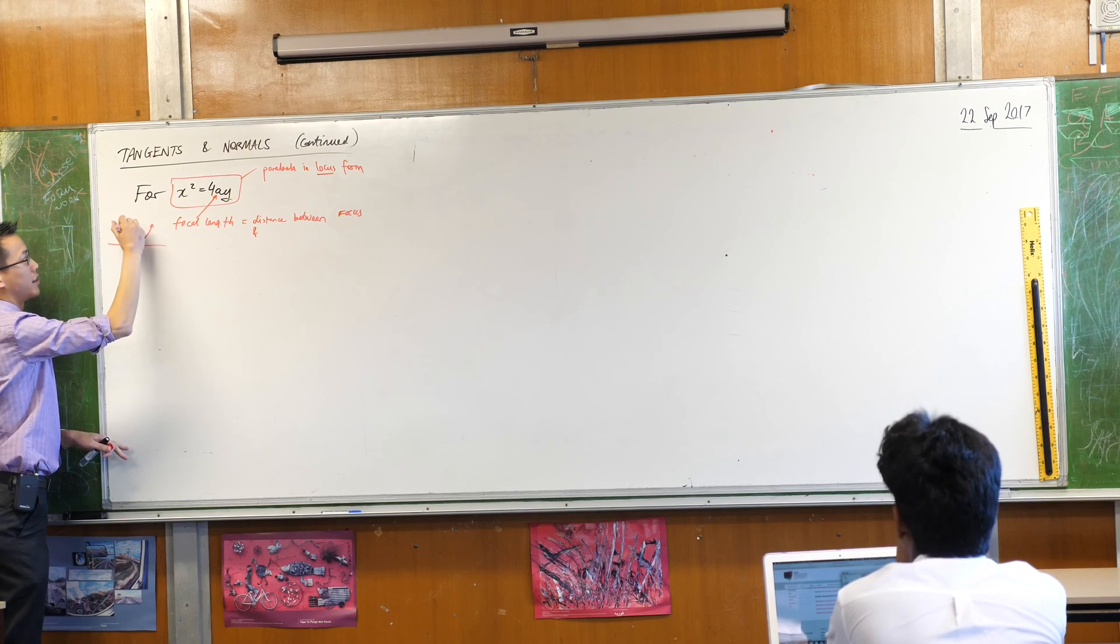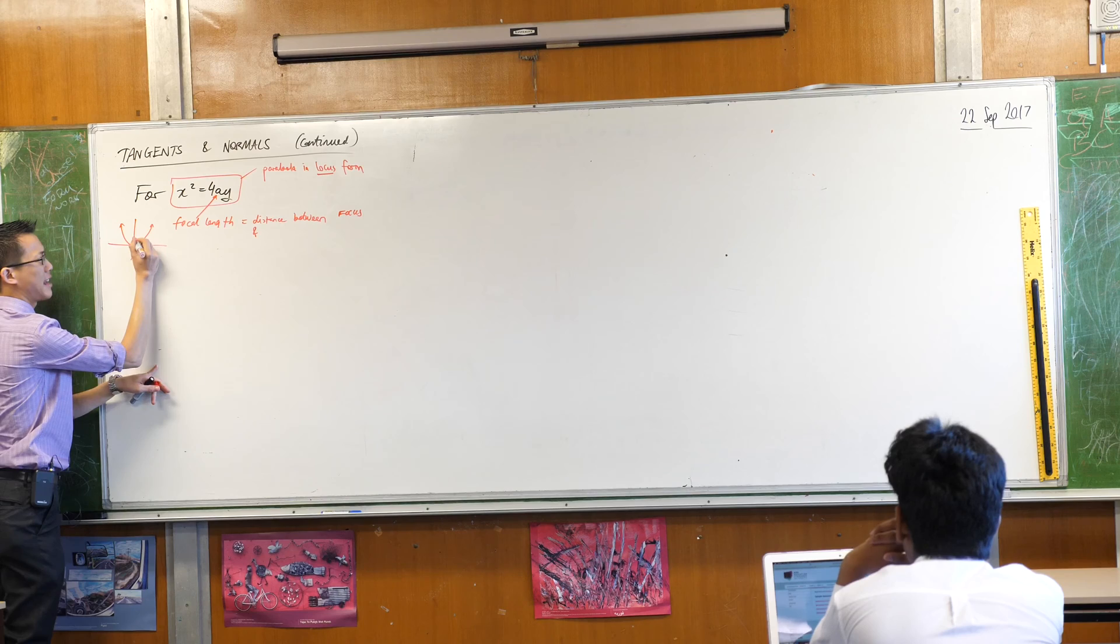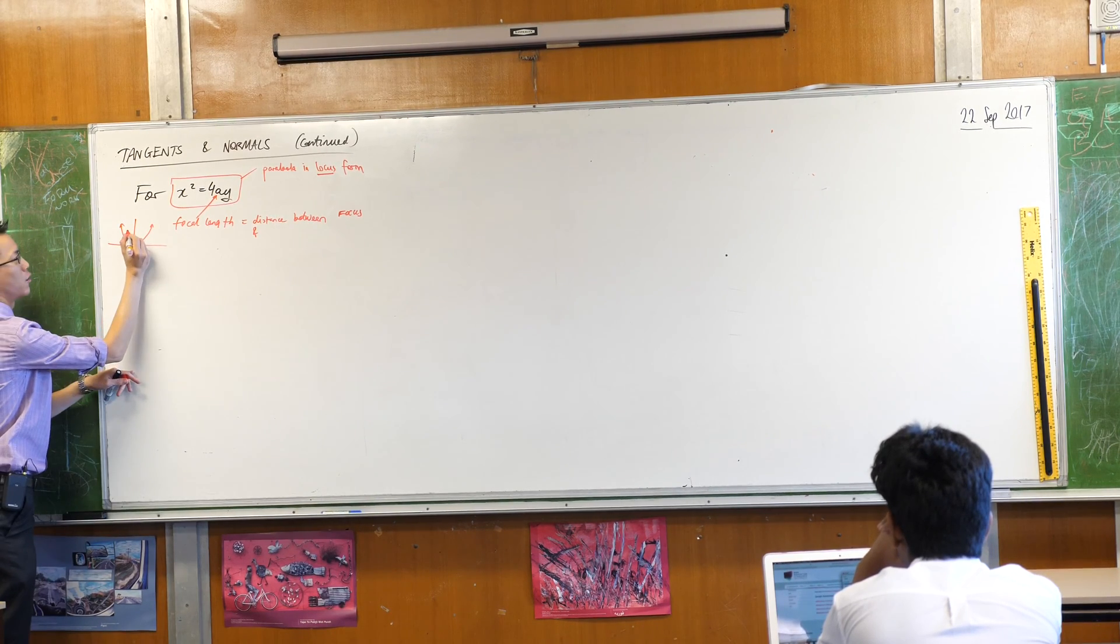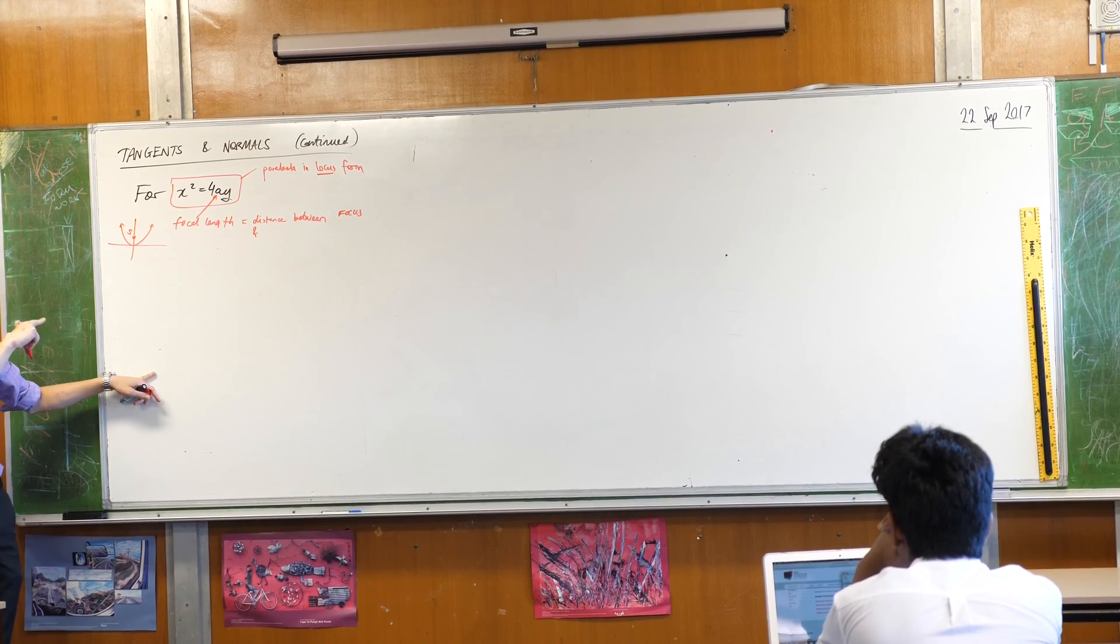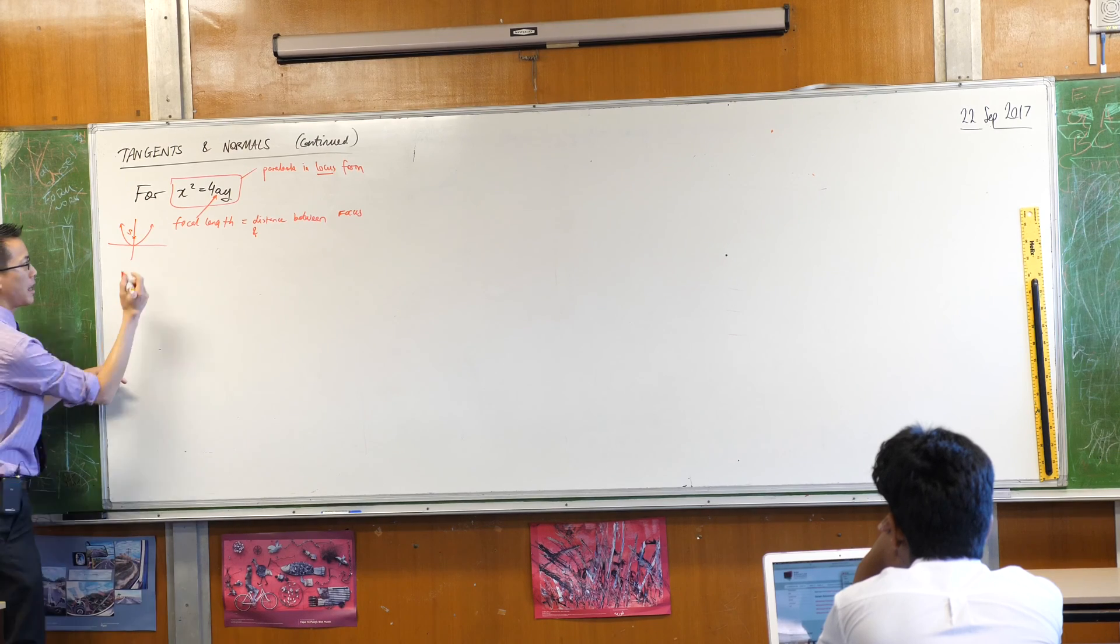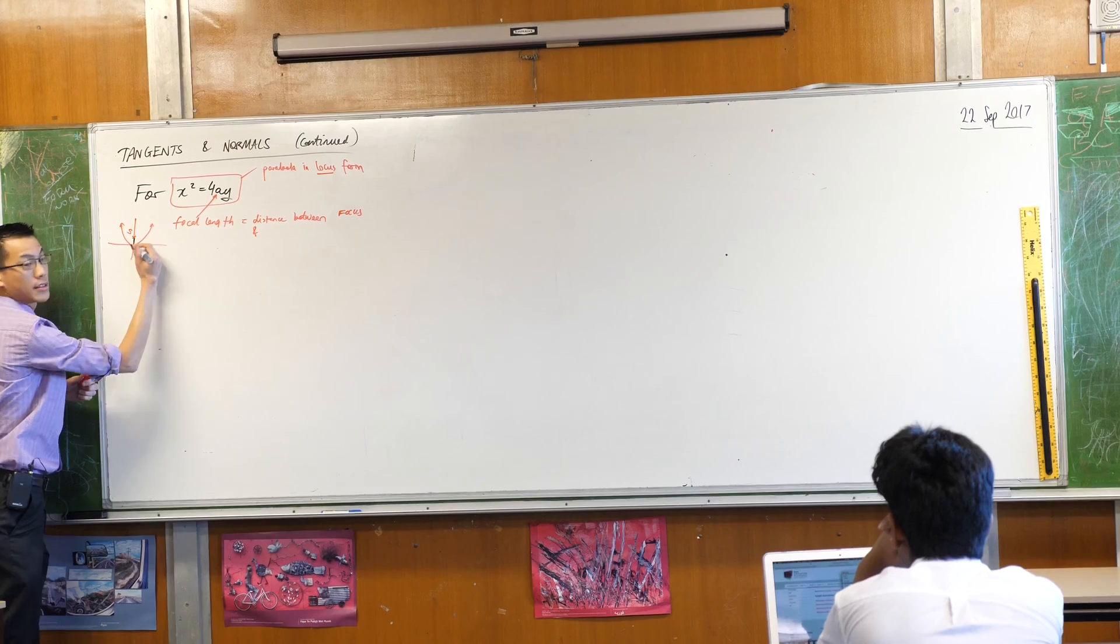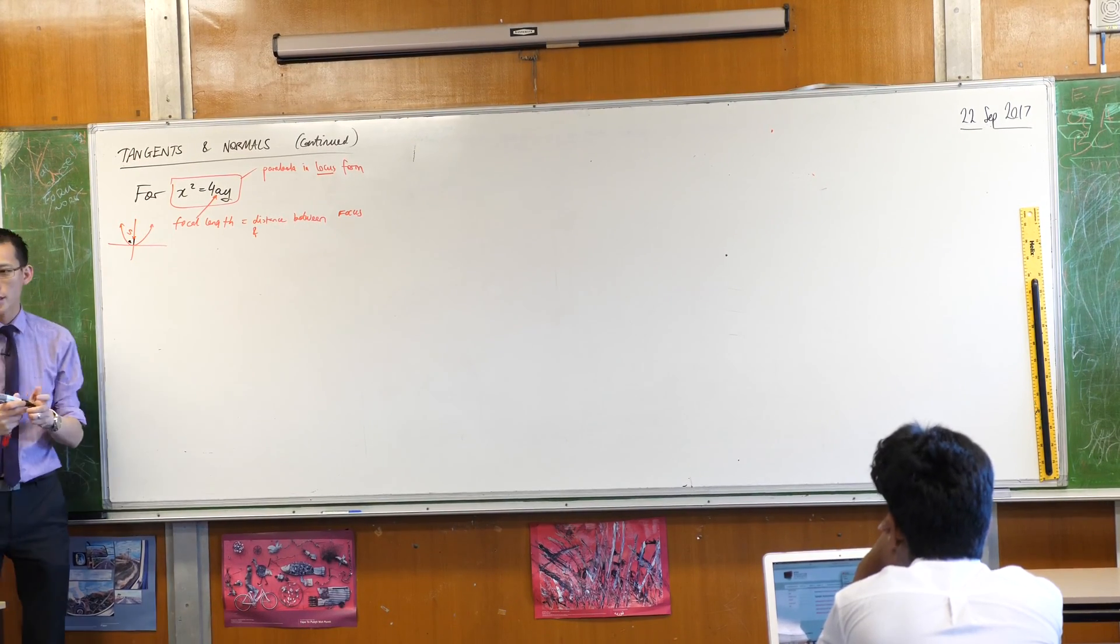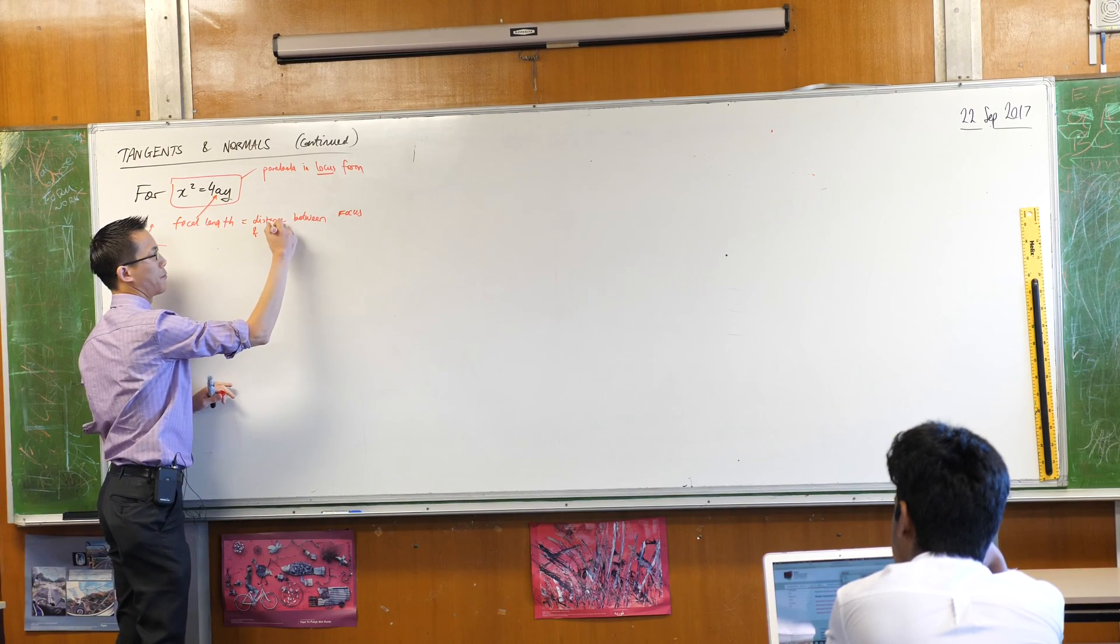When you think about our regular parabola, like so, okay? The focus, I guess we'd place that somewhere up here. If that's where the focus is, and I'm going to label it with the characteristically unhelpful letter s. If that's where the focus is, where's the focal length on this diagram? Yeah, it's this distance, isn't it? That's the focal length a. So it's the distance between the focus and the what? And the vertex, right?